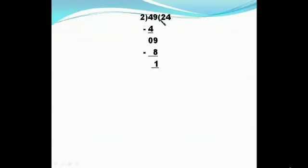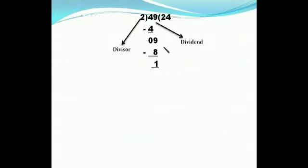Next example: 49 divided by 2. Here 49 is the dividend and 2 is the divisor. Using tables of 2: 2 twos are 4, so 4 minus 4 is 0. Bring down 9. Since 9 is between 8 and 10, take the smaller: 2 fours are 8. So 9 minus 8 gives remainder 1. The quotient is 24 and the remainder is 1.